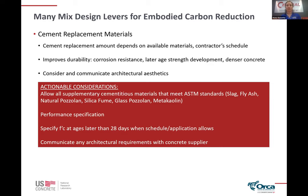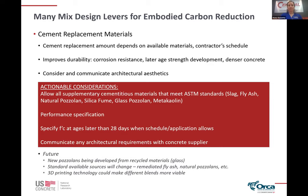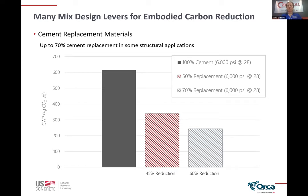You want to make sure you're doing that where it doesn't impact the schedule. In terms of what these do for embodied carbon: the gray bar on the left is a 100% cement mix, the middle bar is a 50% cement replacement mix at the same compressive strength — 6000 psi at 28 days — and we're getting a 45% reduction. When we go to mixes that are 70% cement replacement at that same performance, we're actually getting a 60% reduction in embodied carbon.